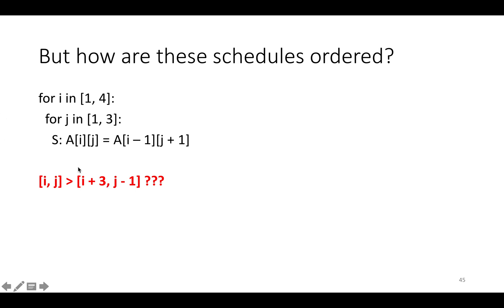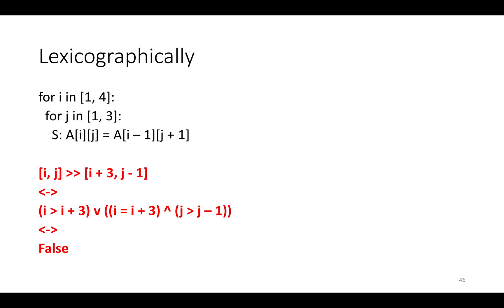But how do you compare vectors? And if you're a more mathematically oriented person with some formal math background, you might know that there isn't actually a total order in higher dimensions. And the answer is lexicographically. So we're going to use an ordering which is written normally using the double greater than and double less than sign. And it's that [i, j] is lexicographically greater than [i+3, j-1] if and only if i is greater than i+3,